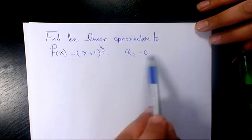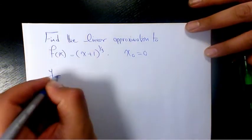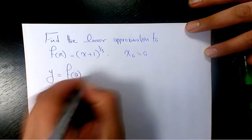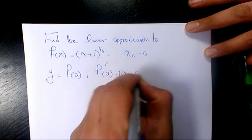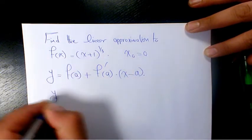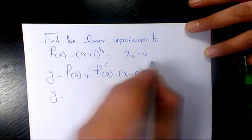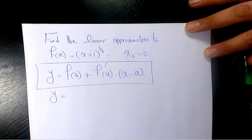So we have y = f(a) + f'(a)(x - a). This is the general formula for the linear approximation.